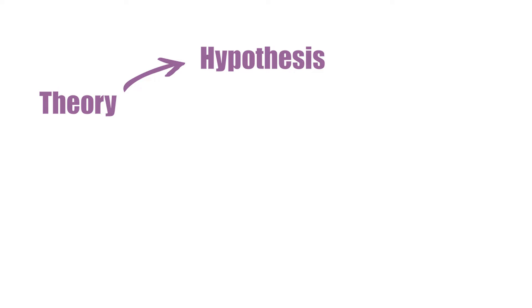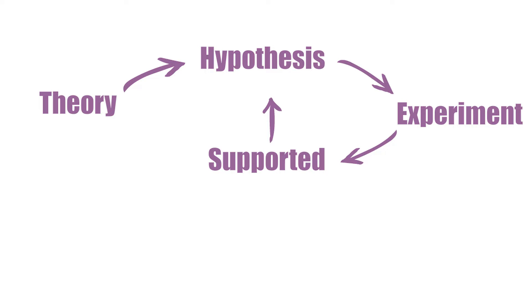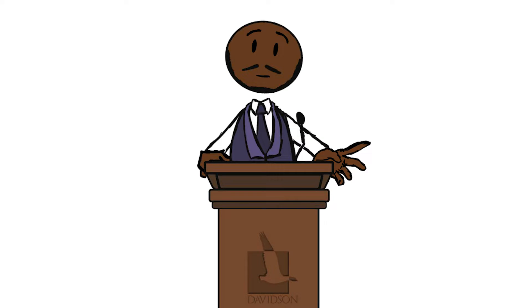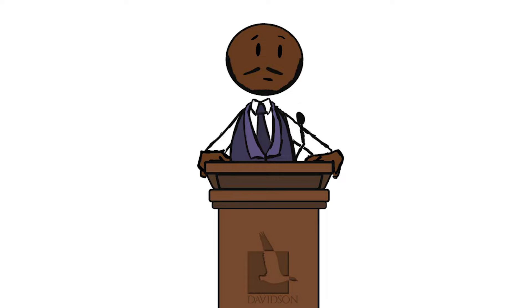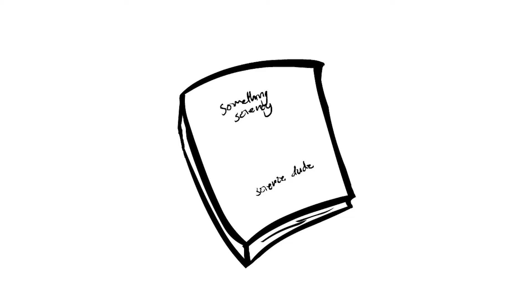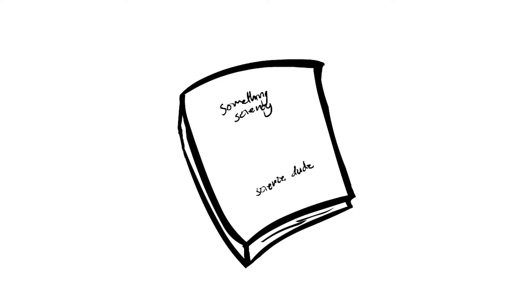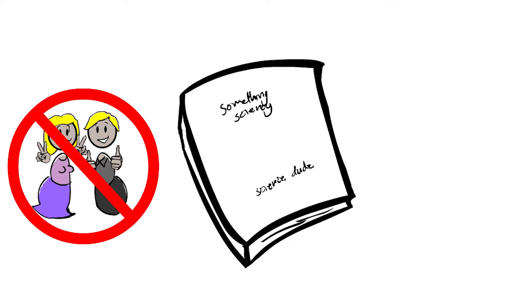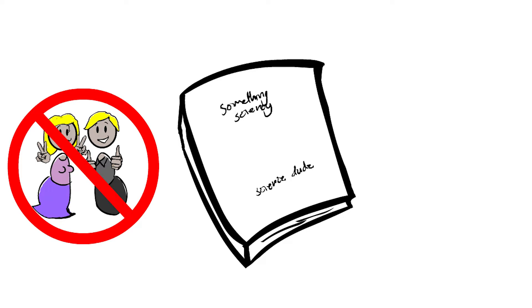So we had our hypothesis based around theory, we conducted an experiment which supported our hypothesis, but what now? Well, now we have to let others know our findings. We need to get our results published in a scientific journal. Scientific journals are like normal magazines, but rather than compiling stories about celebrity lifestyles, they contain scientific papers or reports.